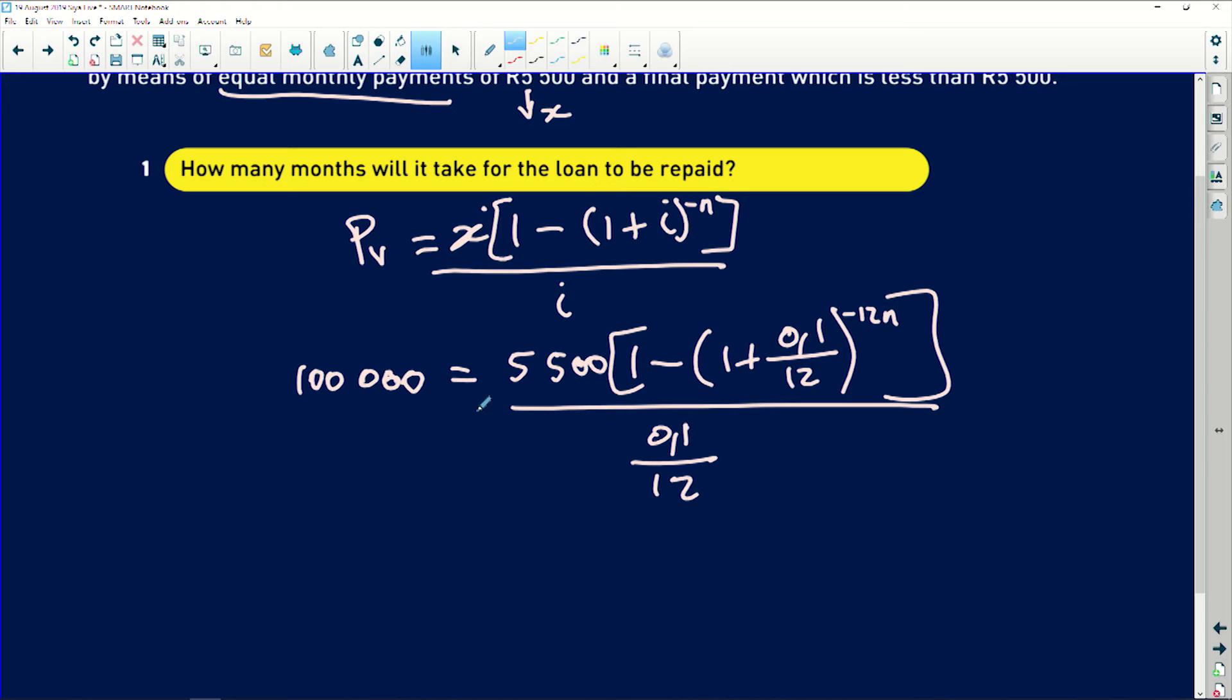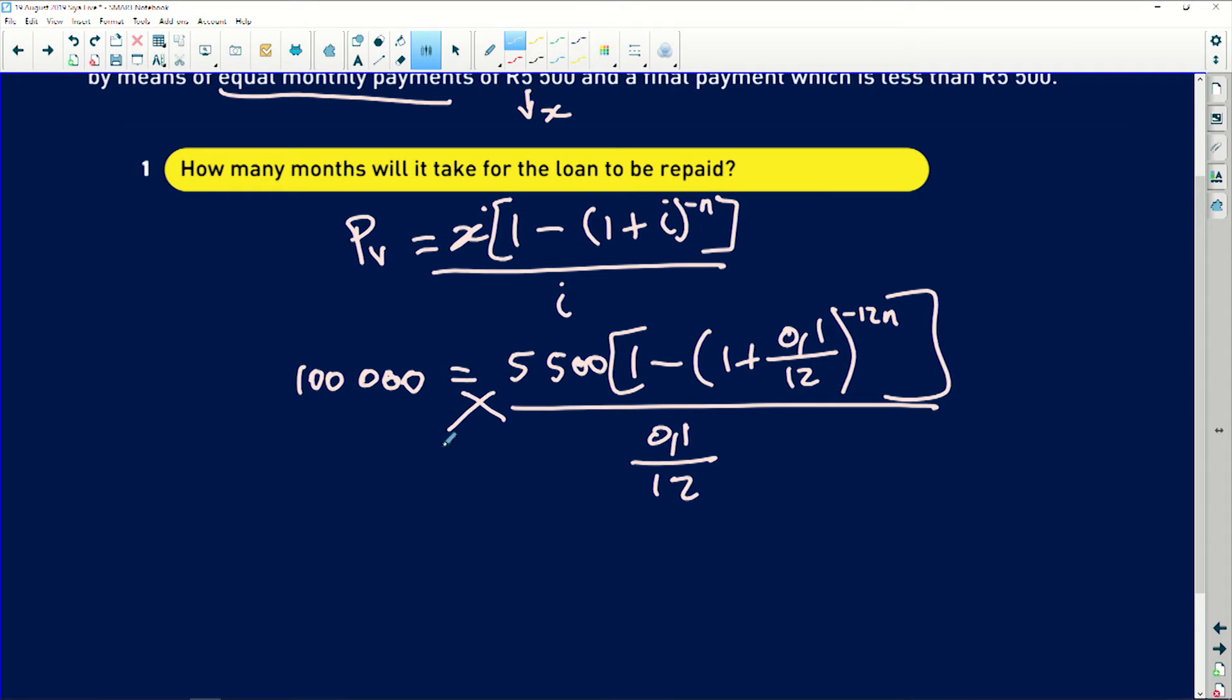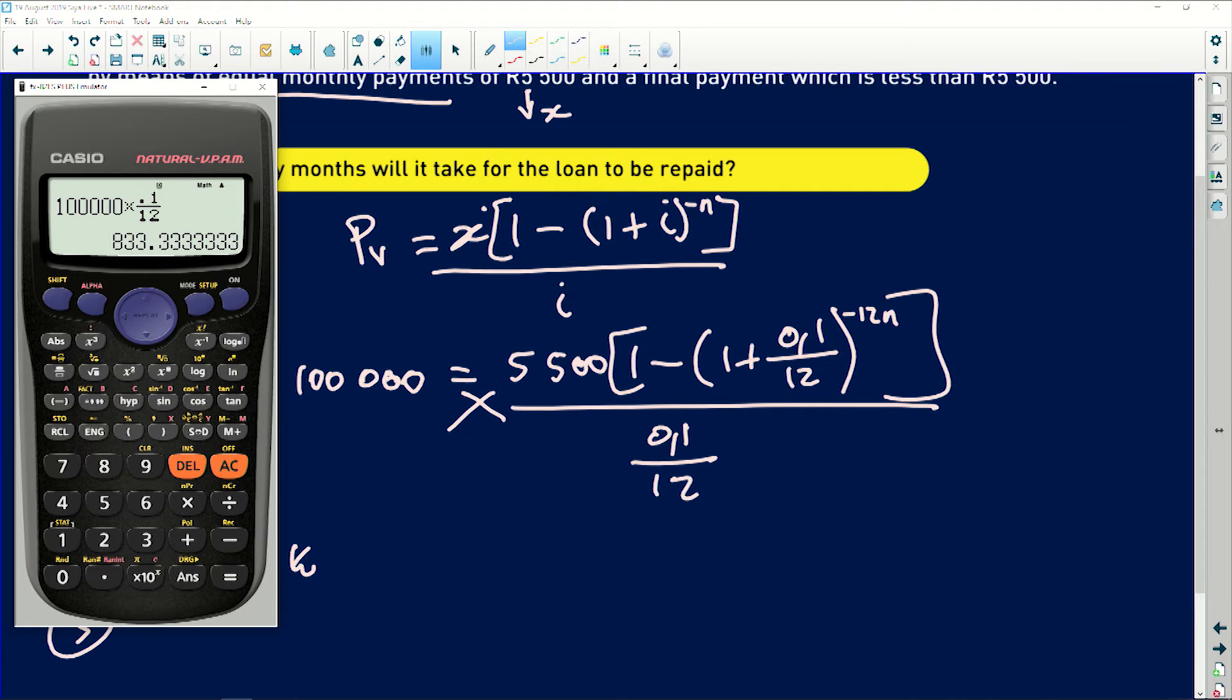Now with this, so I first cross multiply. So step number one, it will be to cross multiply. Step number two will be divide by 5,500. I'll just say K there. And then number three, we'll get to that just now. So firstly, we did that. Then I need to divide by 5,500, which will be equal to that amount there.